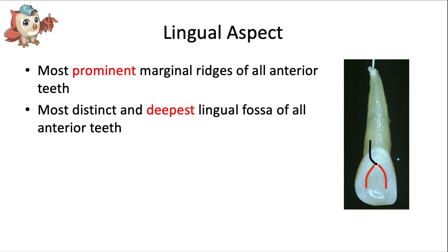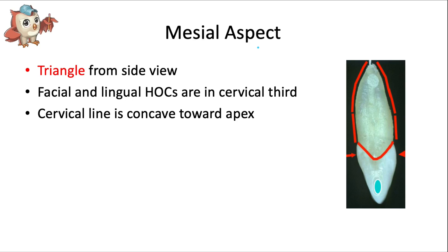From the lingual aspect, we can notice a few important things. This tooth has the most prominent marginal ridges of all the anterior teeth. It also has the most distinct and deepest lingual fossa area of all the anterior teeth. Some maxillary laterals actually have a pit where the marginal ridges meet at the cingulum, and I'll share more details on that later in the video when we talk about common anomalies.